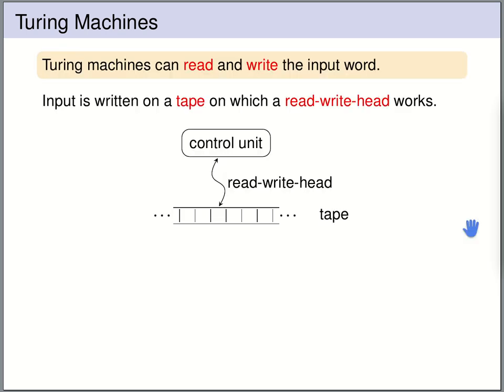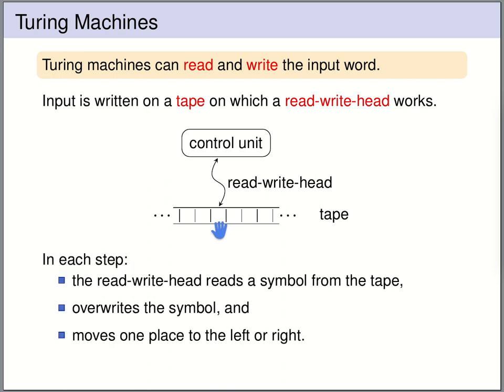A Turing machine has a control unit, which is basically a finite automaton with some state. It has a read-write head that can read and write cells on the tape. In each step the machine reads the symbol currently under the read-write head, overwrites the symbol, changes the state, and moves one place to the left or one place to the right on the tape.